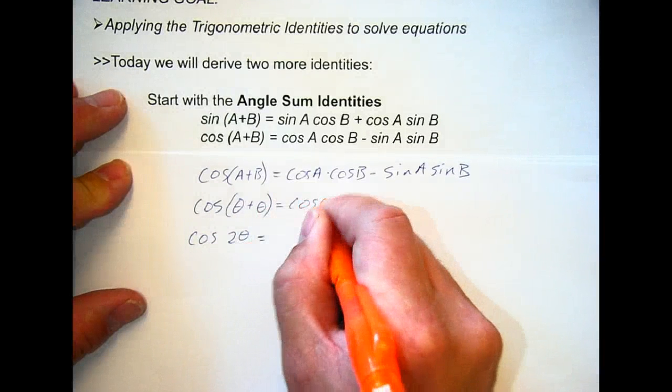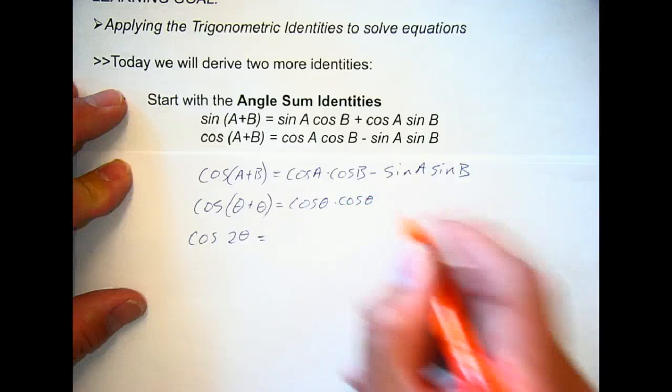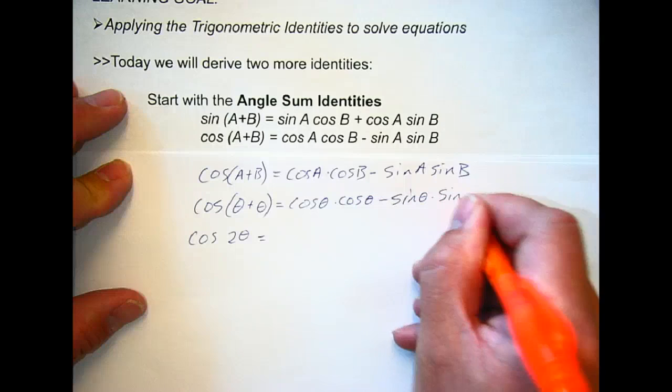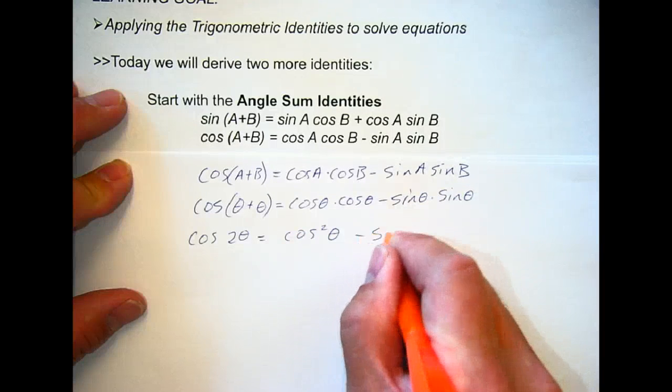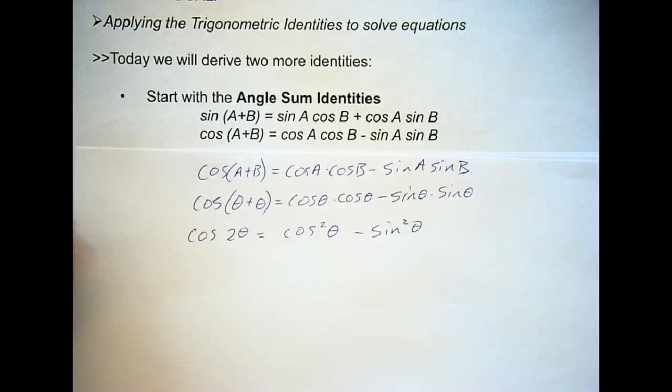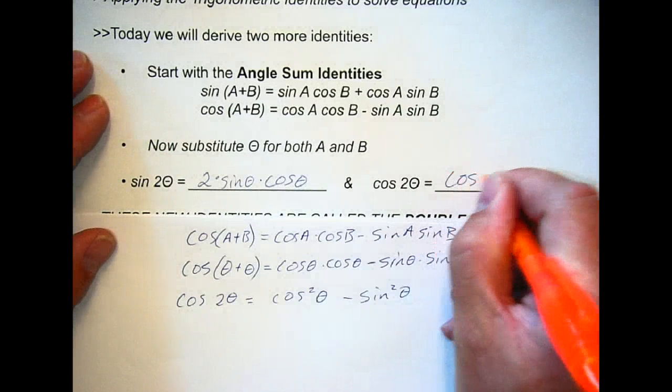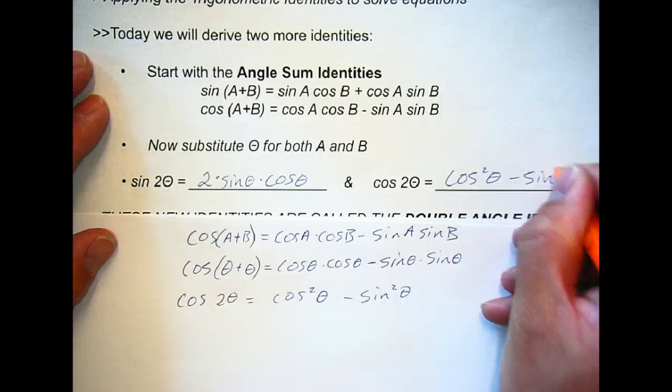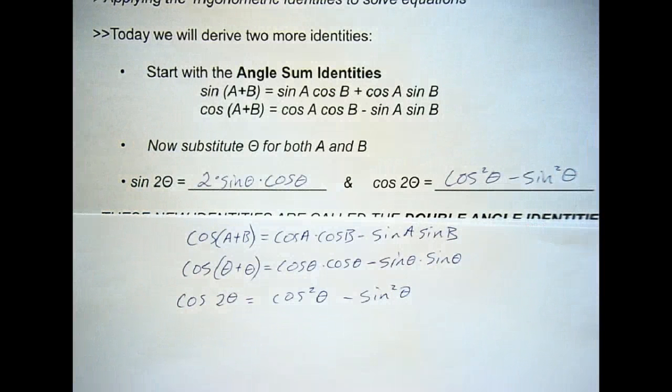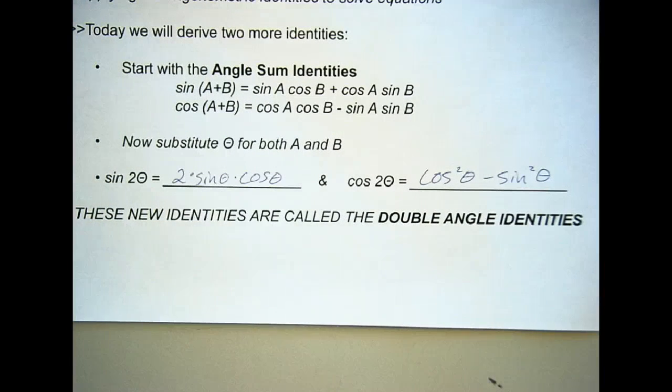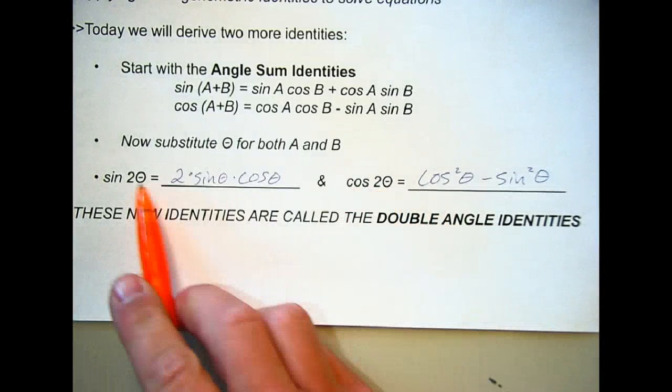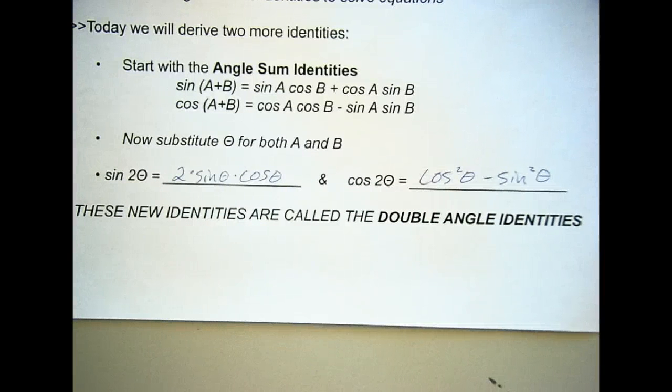That's cos theta times cos theta minus sine theta times sine theta. That's cos what? Squared theta. Good. Minus? Sine squared theta. That gives us cos squared theta minus sine squared theta. Those are our two new identities. These are called the double angle identities. Hopefully it's obvious why. Okay. Any questions on those?